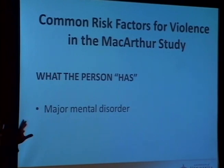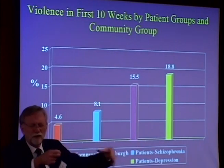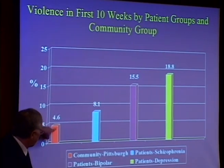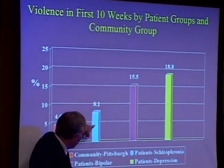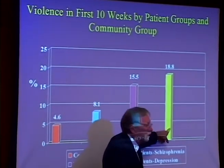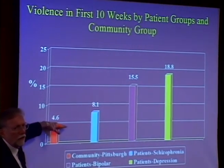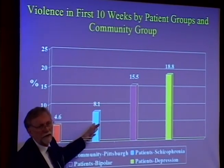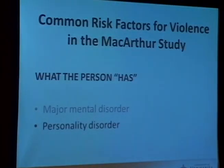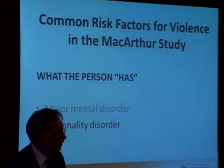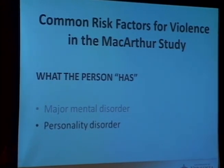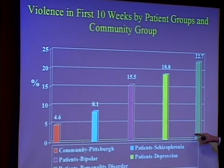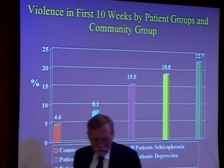The second category is what the person has — like a major mental disorder. We had a control group from the same neighborhoods who had never been hospitalized. About 5% of the general community had committed at least one violent act in a 10-week period. Patients with schizophrenia, bipolar disorder, and depression all had statistically significantly higher rates. People with schizophrenia may have had lower rates partly because paranoia kept them from leaving the house. Personality disorder — such as antisocial personality disorder, related to but not the same as psychopathy — showed 23% committing at least one violent act, higher than any major mental illness category.